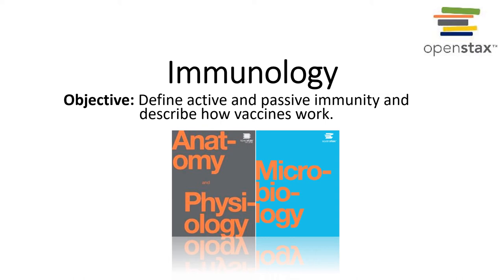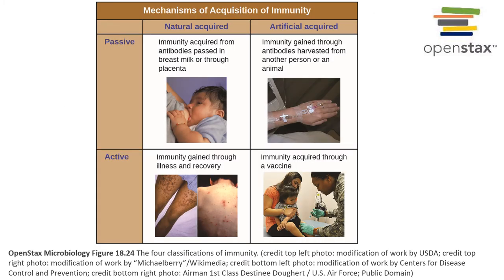In this video I will define active and passive immunity and describe how vaccines work. Immunity refers to protection from a disease, specifically protection caused by a specific pathogen.